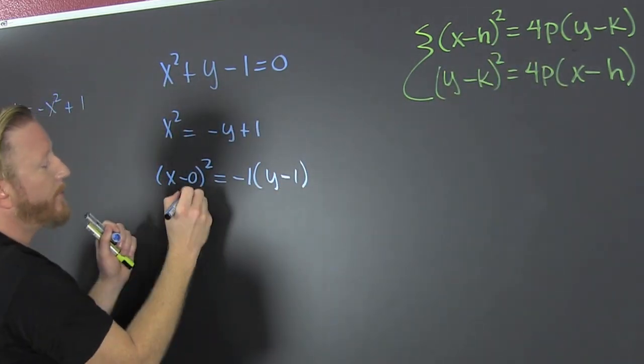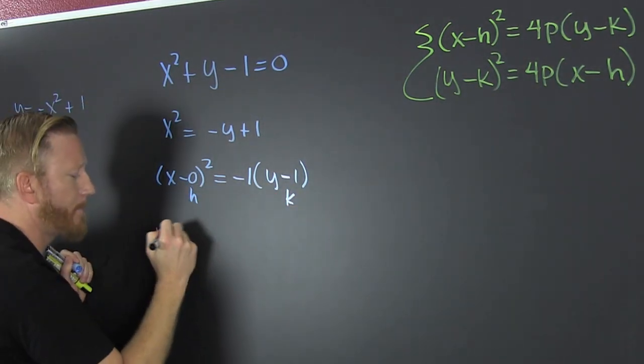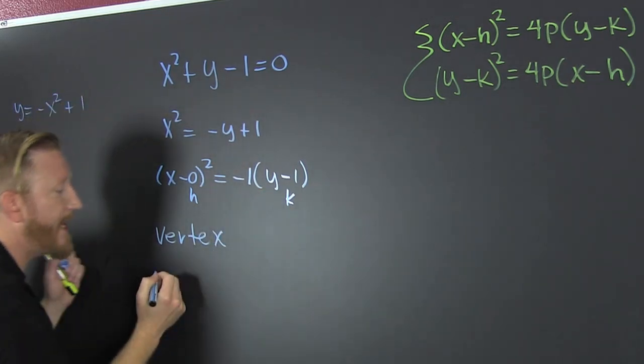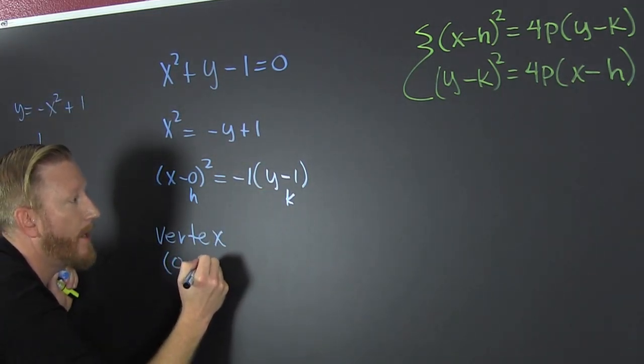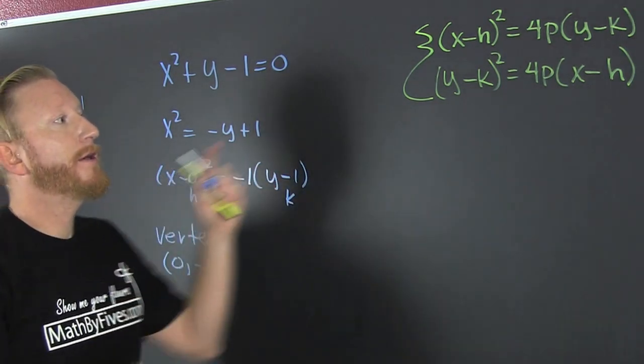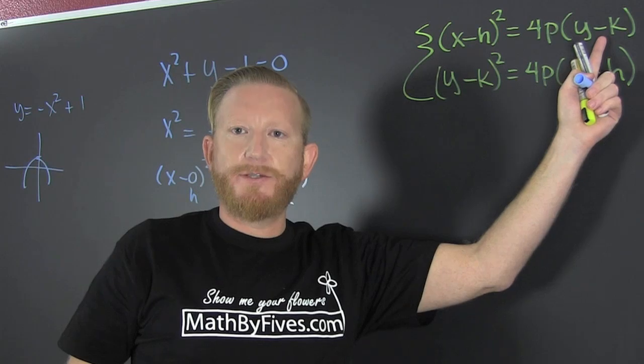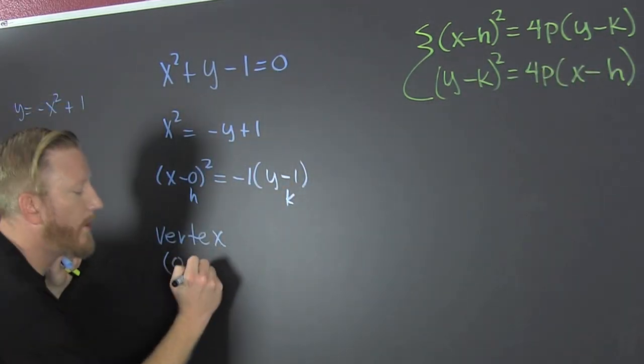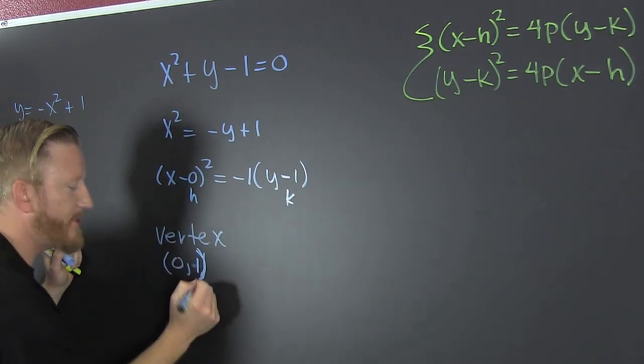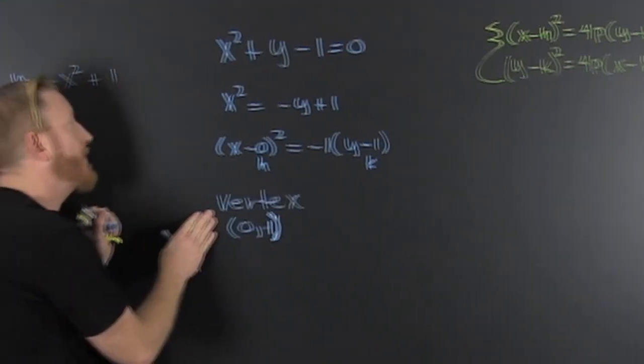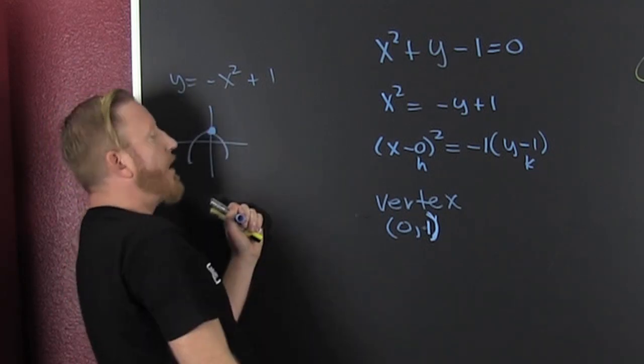So from there, I know my vertex is at h, k. So that's zero minus k. So it's the opposite sign of the thing that you see in there. Zero, one. Get over there. Curves. Accentuate your curves. Your vertex is the point. Which point? This point. Oh, look at that.